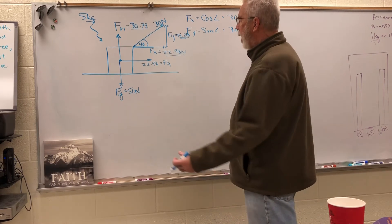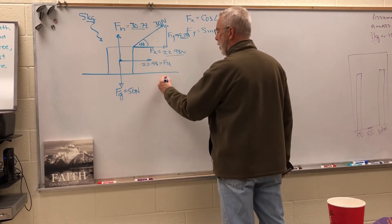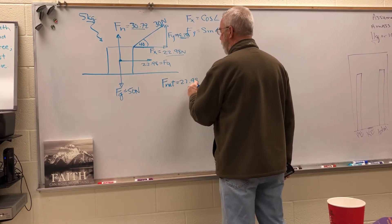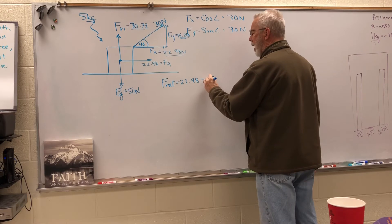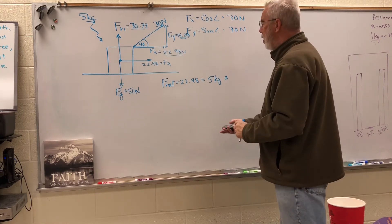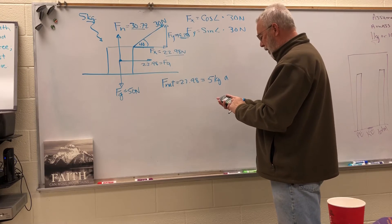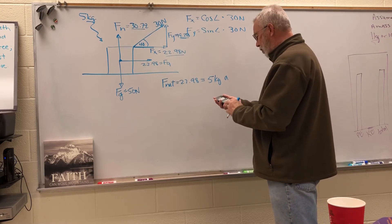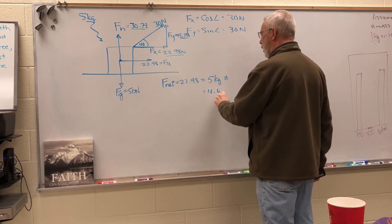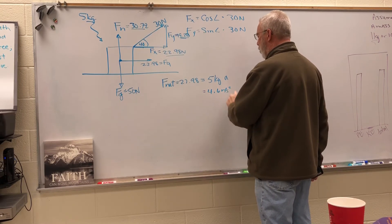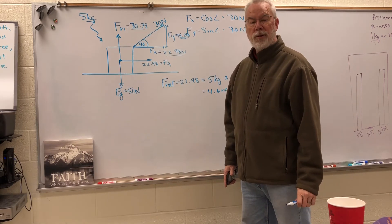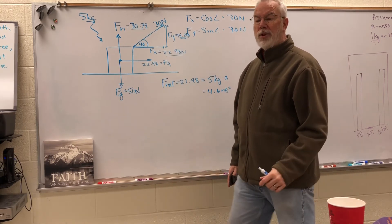When you look at this problem, we've got all the vectors solved for, and now we're looking for the net force. The net force is just the 22.98 and the mass is five kilograms, so we're solving for the acceleration. 22.98 divided by five equals 4.6. 4.6 meters per second squared is the acceleration of the box under those circumstances.